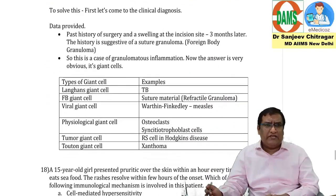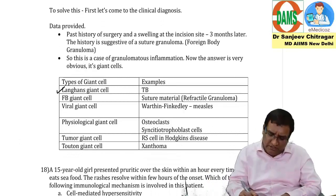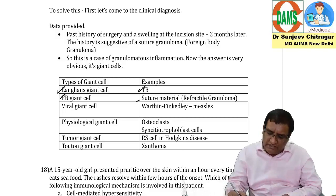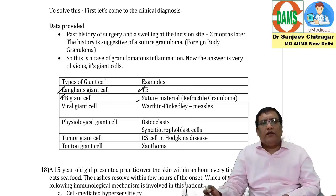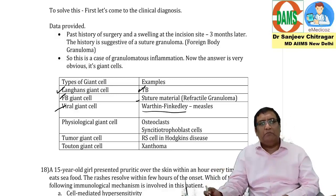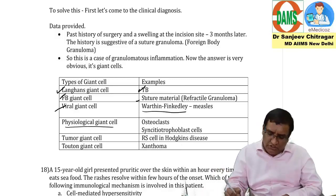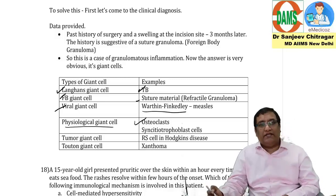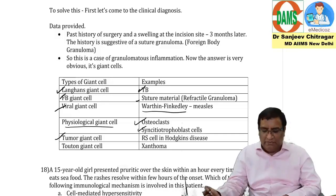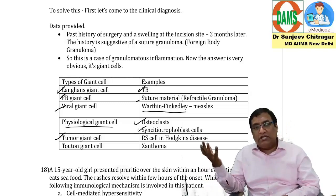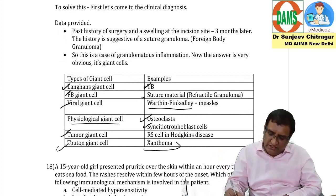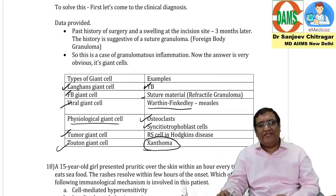There are different types of giant cells: Langhans giant cells are seen in TB; foreign body giant cells for suture material or fungus; viral giant cells like Warthin-Finkeldey cells in measles; physiological giant cells include osteoclasts; syncytiotrophoblasts are also giant cells; tumor giant cells in Hodgkin lymphoma such as Reed-Sternberg cells; Touton giant cells seen in xanthomas and xanthomatosis.